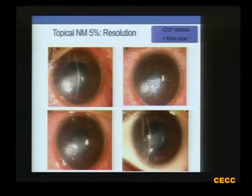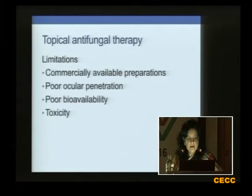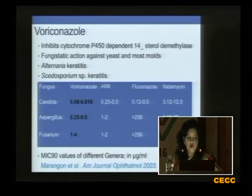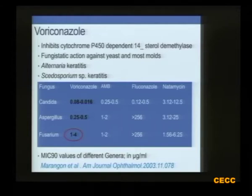Topical antifungal therapy has limitations due to poor ocular penetration and poor bioavailability, which is a problem with natamycin as well as toxicity. Voriconazole did come into use, but the MIC values for voriconazole against Fusarium are high, so all cases of Fusarium may not respond to voriconazole, although for Candida and Aspergillus the MIC values are lower.